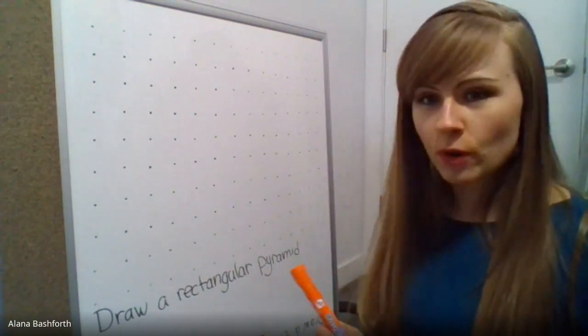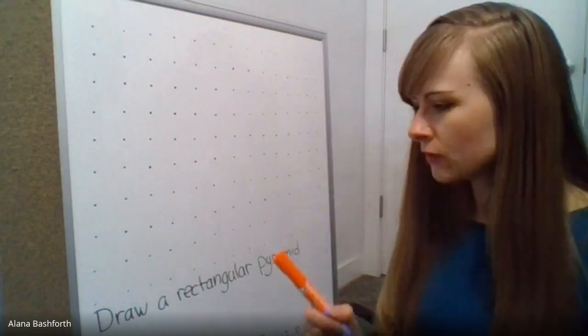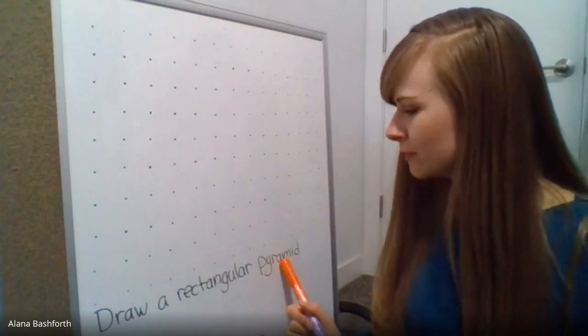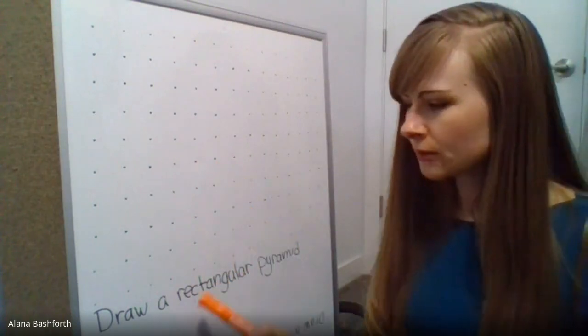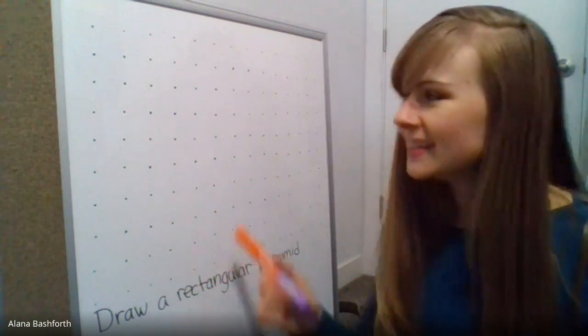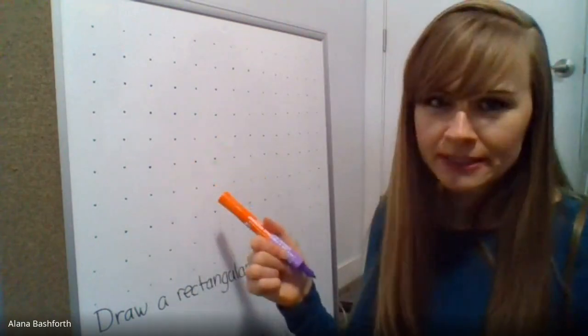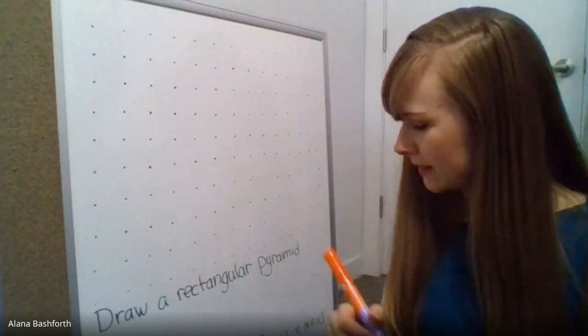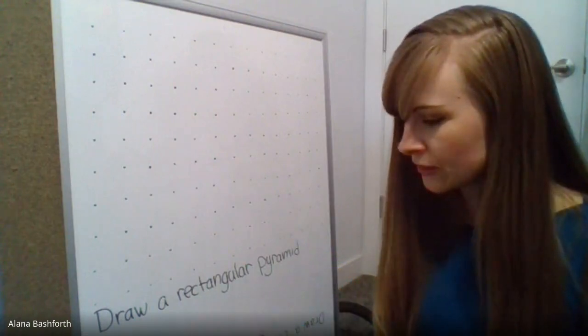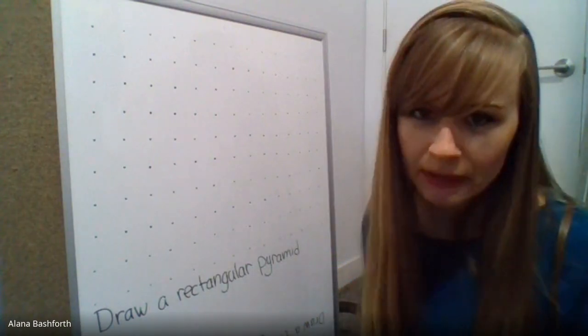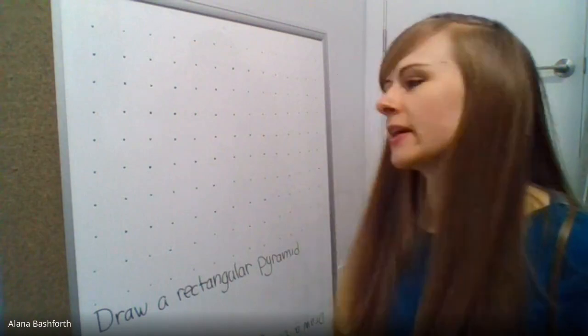For our square dot paper, we are going to practice drawing a rectangular pyramid. I chose square dot paper because a rectangle fits onto this shape easily. We're going to draw a triangular prism on the triangle dot paper because a triangle fits easily on there.